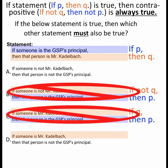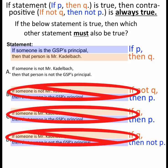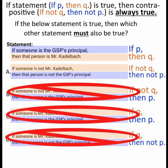The next one: if someone is Mr. Kattelbach — if Q — then not P. Again, not the contrapositive. But let's look at A: if someone is not Mr. Kattelbach — if not Q — then that person is not GSP's principal — then not P. There is my contrapositive, so there's my answer: A.